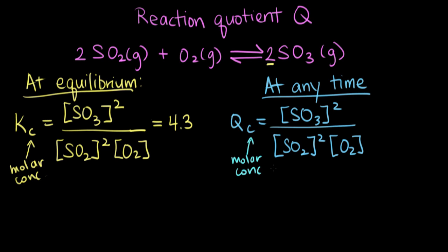So let's calculate this for a set of example concentrations. At some point in our reaction, we have the following concentrations: 0.10 molar SO2, 0.30 molar O2, and 3.5 molar of our product.